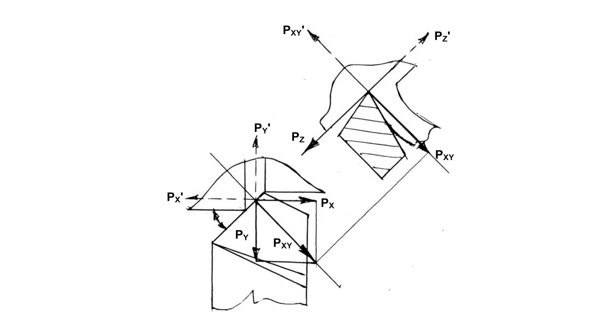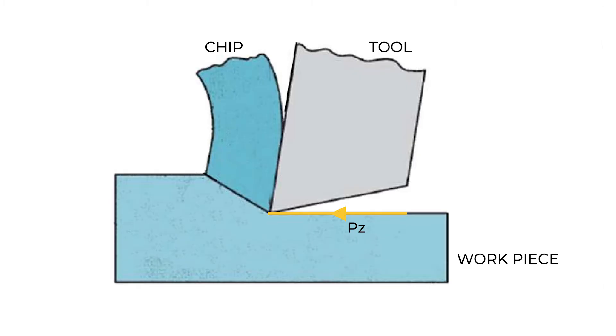These forces can be measured during machining using a dynamometer. In orthogonal cutting, when the chip flows along the orthogonal plane Pi-O, the components Pz and Pxy and their resultant R1 remain in the orthogonal plane.